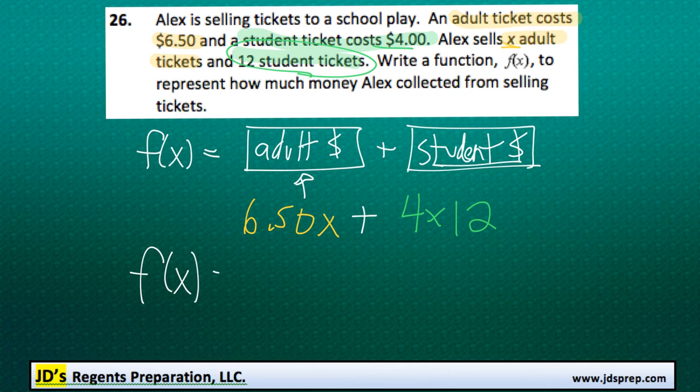And so in the end, our function is going to be 6.50X plus 48, because that's what 4 times—or sorry, 4 times 12 is.